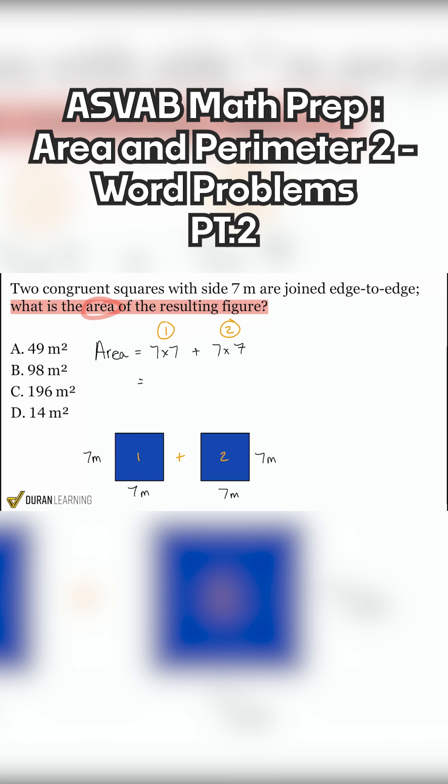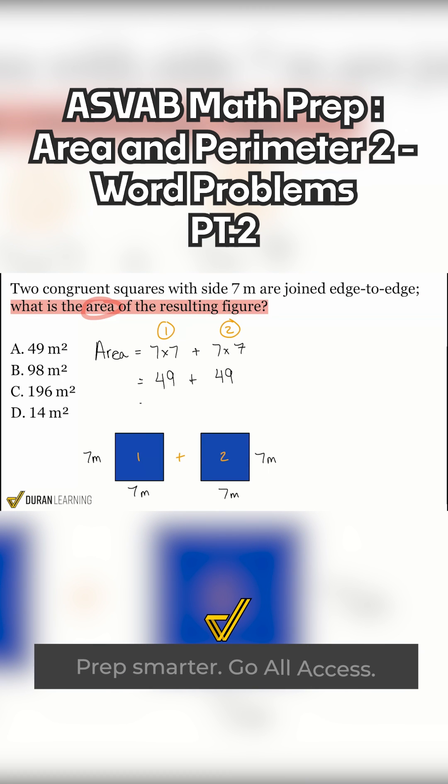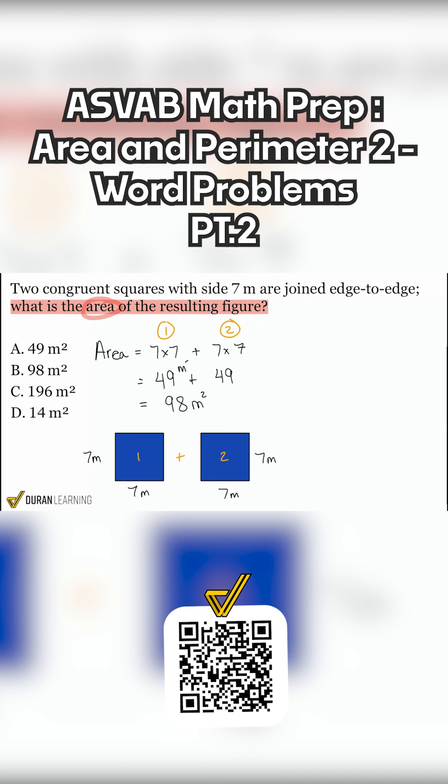Seven times seven is going to give us, yeah, that's going to be 49. Nice and easy. And if we add that with what we know the other area is going to be 49, add both of these together and we will get 98 square meters because the first one is 49 square meters. The second one is 49 square meters. Add them together and we get 98 square meters.